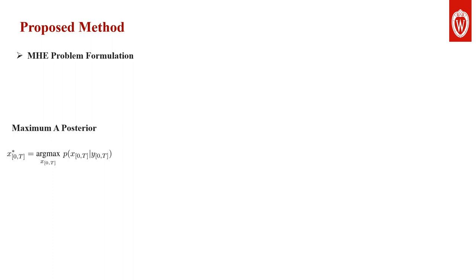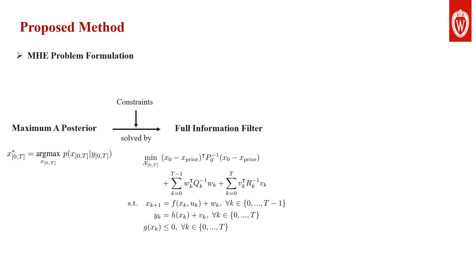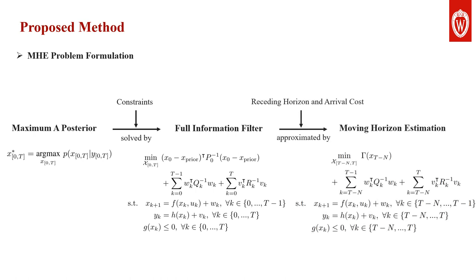Considering the physical constraints that legged robots are subject to, the filtering method is not the optimal estimator. The optimal state estimator solves the maximum a posteriori problem. The full information filter solves the MAP problem for a globally optimal solution combined with state constraints. By incorporating a receding horizon and arrival cost, the computationally intractable FIF is approximated by moving horizon estimation, which is mathematically formulated as a non-convex optimization problem.